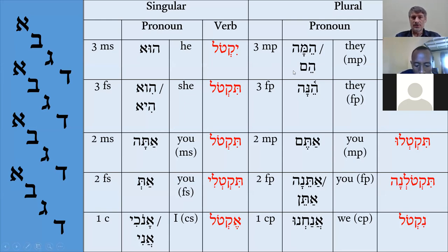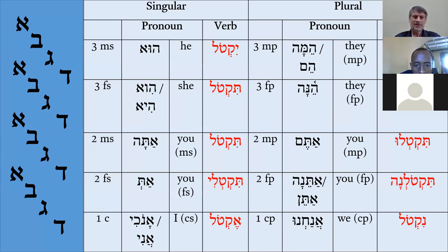This is the Yiqtol conjugation, and it is very important. I will require you to memorize this conjugation — sometimes it is very difficult — but if you memorize it, it will be much easier in the future. All other conjugations, like the imperative or the infinitive, are based on this conjugation. So if you know Yiqtol, you will know everything else. That is why it is a must.